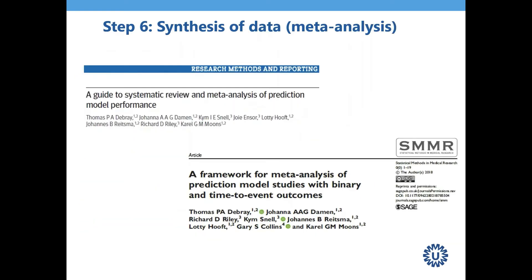Step six — synthesis and meta-analysis — remains a challenge and is still work in progress. Two large publications from the prognosis methods conveners address this: a technical paper in SMMR providing a full framework for meta-analysis of prediction model studies covering both binary outcomes (logistic regression) and time-to-event outcomes (survival models), and a companion plain-language paper in the BMJ. Equivalent papers for meta-analysis of prognostic factor studies are expected in the fall of this year.